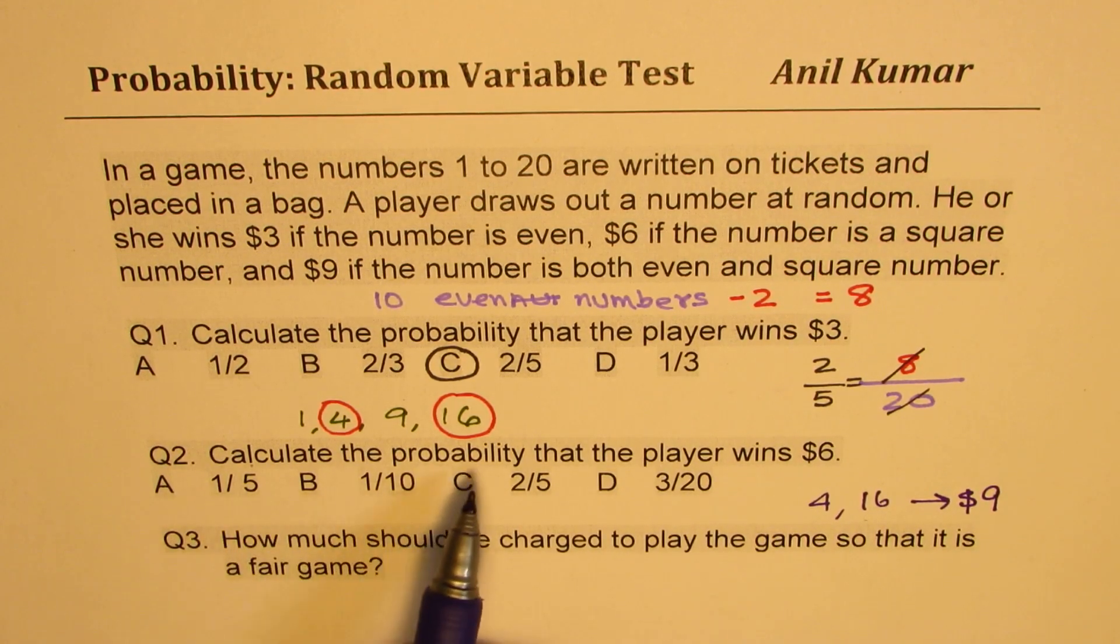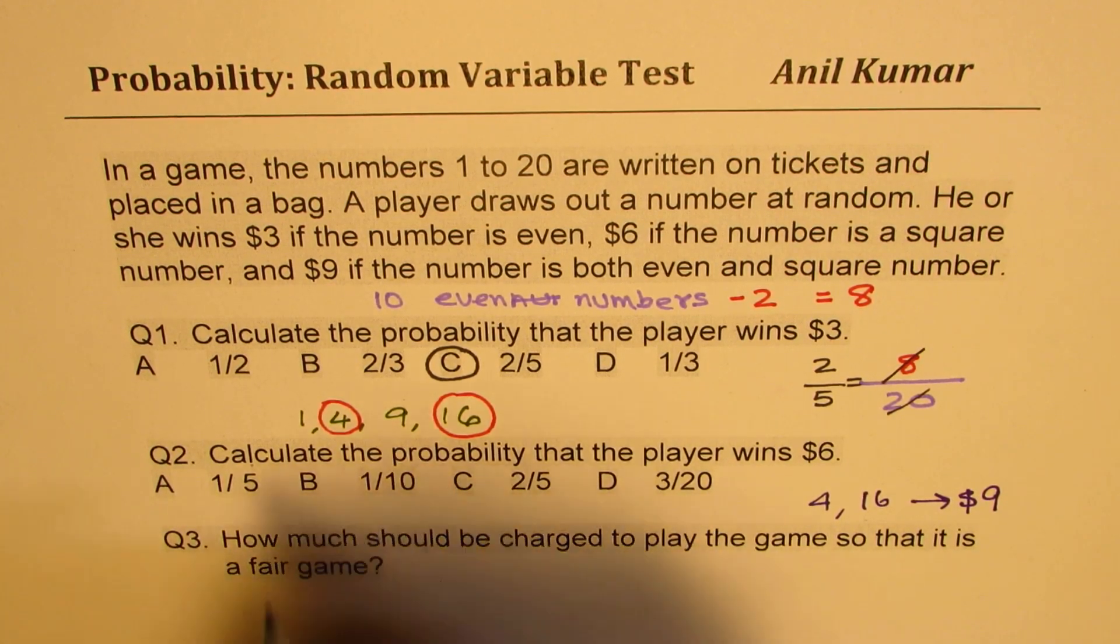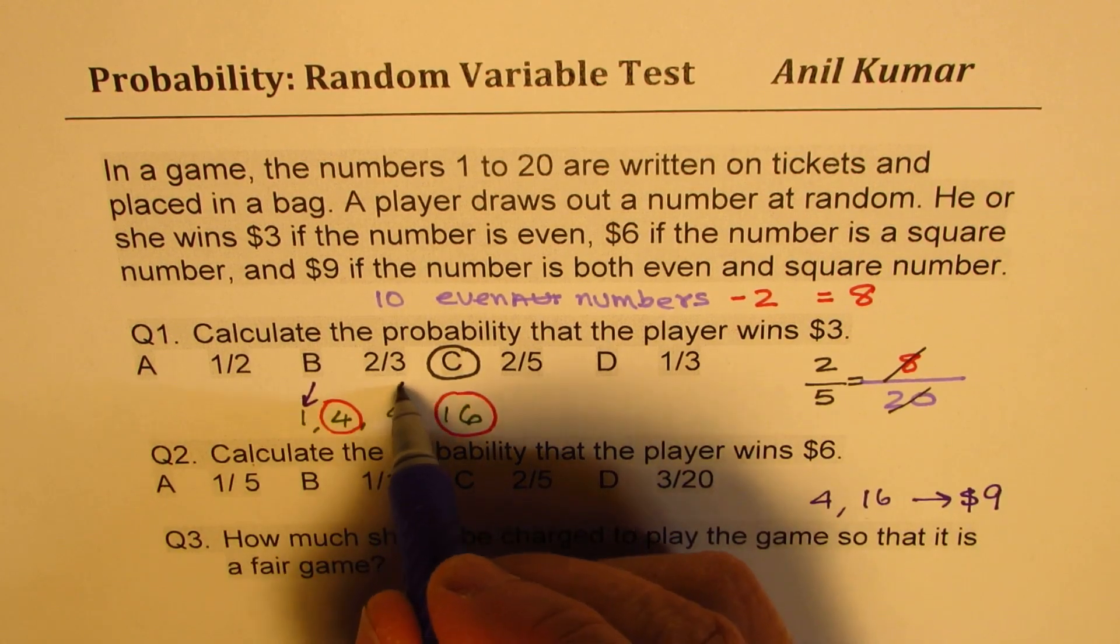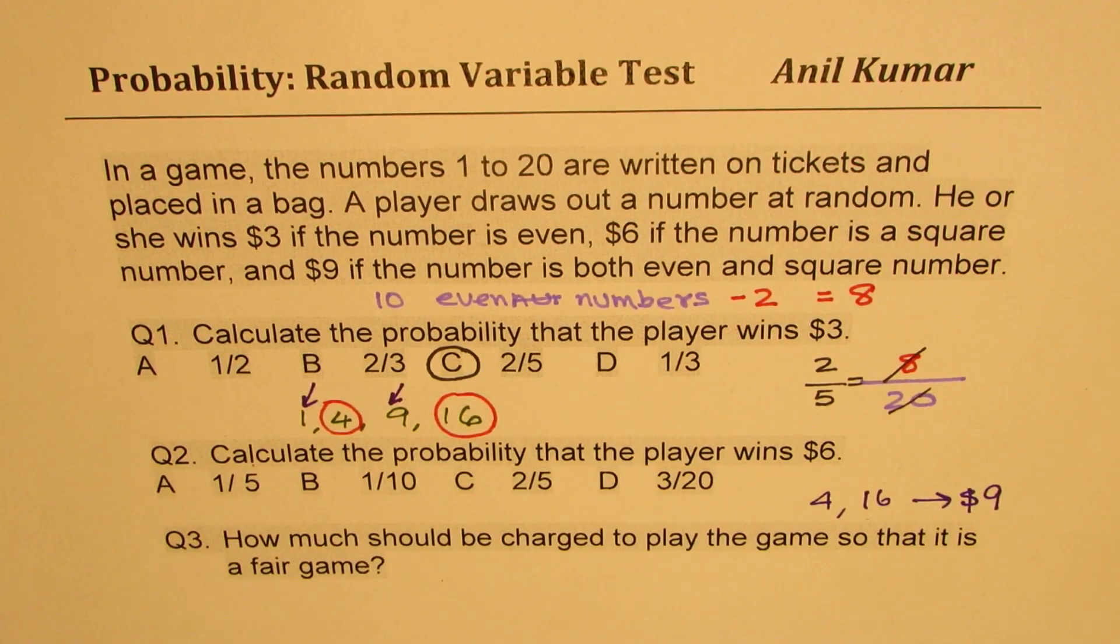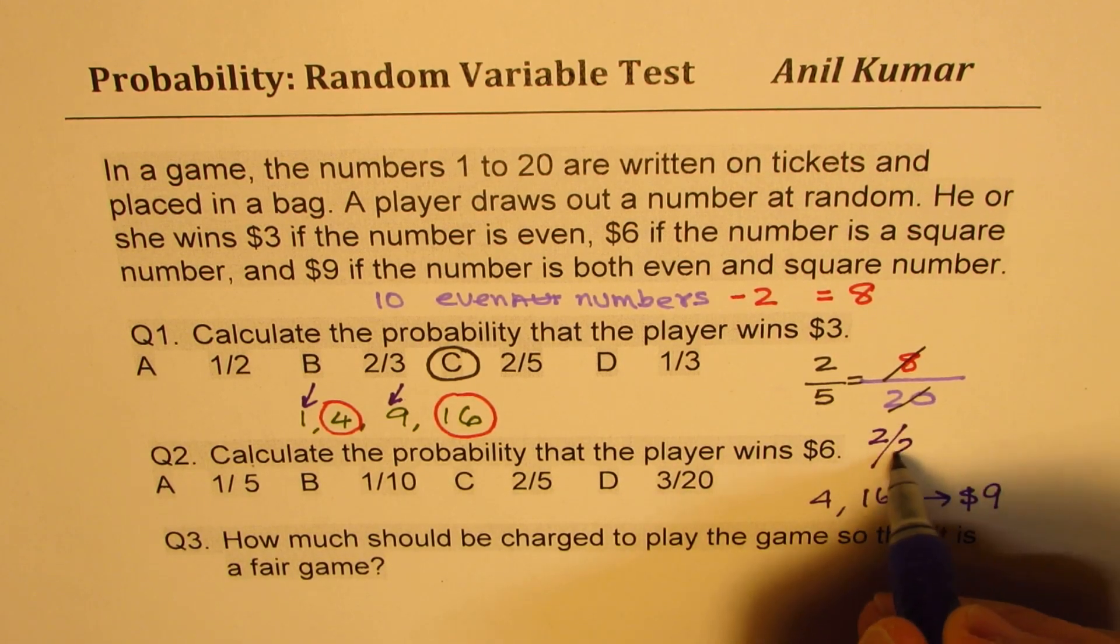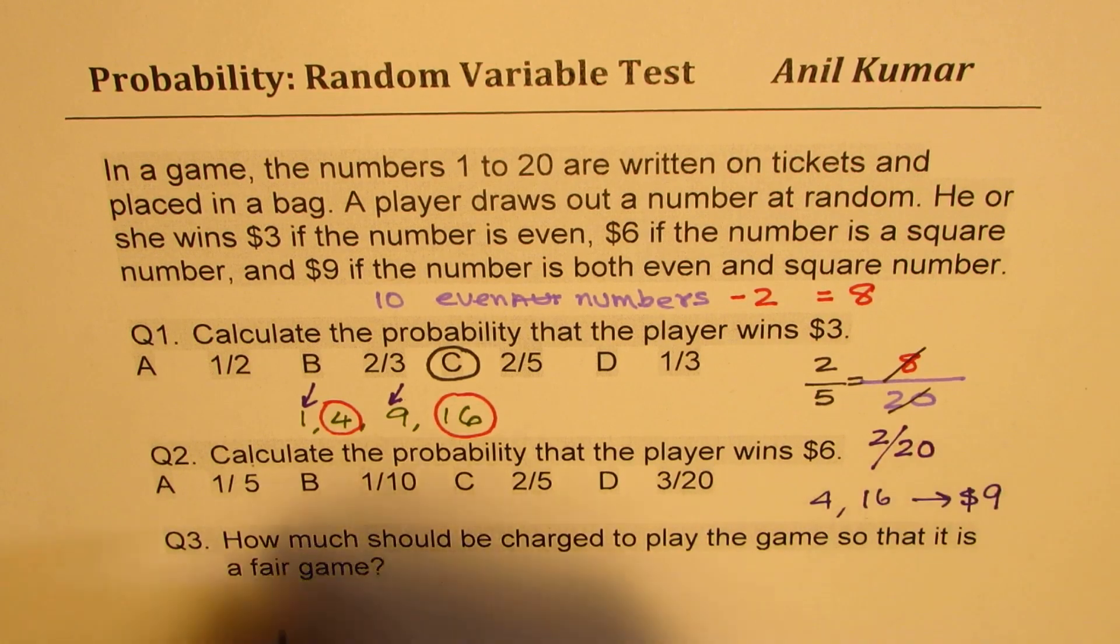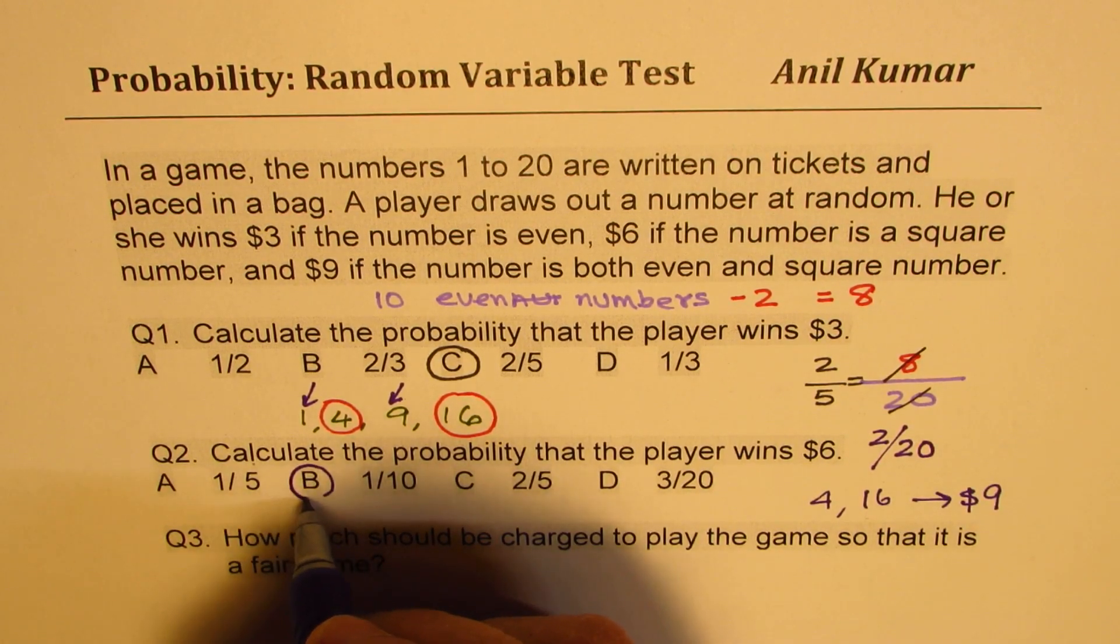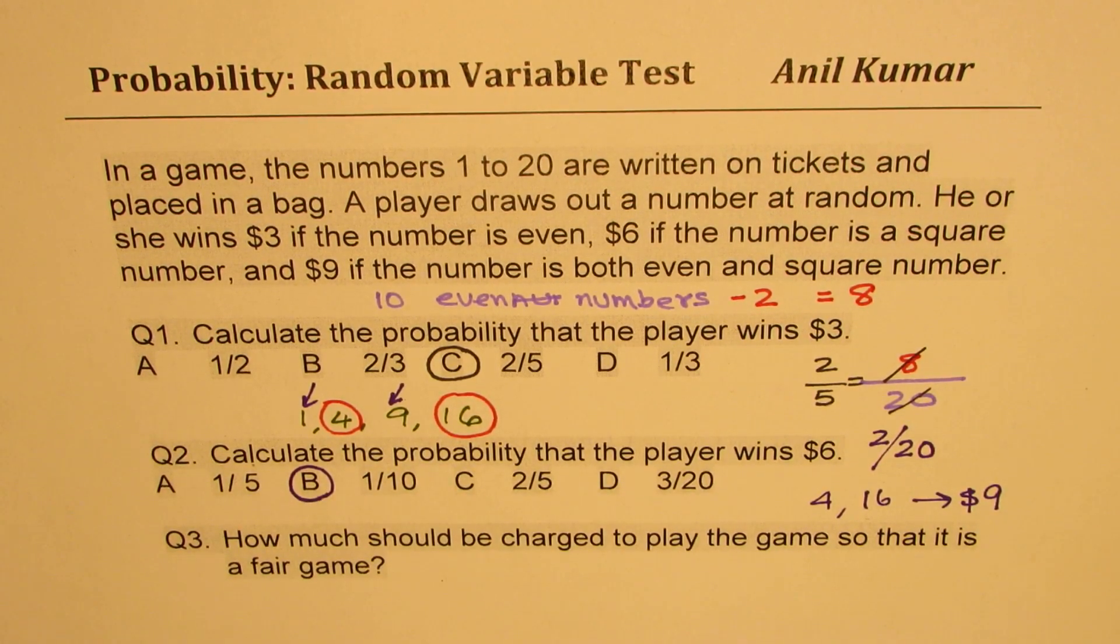But we need to find probability that the player wins $6. So it is only these two numbers, 1 and 9, which are going to give $6. Therefore, the probability here is 2 by 20, which is 1 out of 10. Does it make sense to you? So when you look into such questions, you have to be very careful.